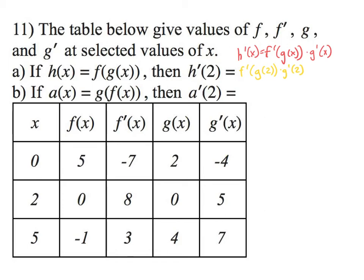So what do we do now? We look at the chart. What is g(2)? g(2) is 0. So what that means is this now becomes f'(0) times, what's g'(2)? So g'(2) is 5. So this would be 5. And next, what's f'(0)? f'(0) is -7. So really, what we got here is -7 times 5. So my answer is -35. That would be the answer for a.